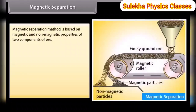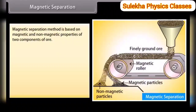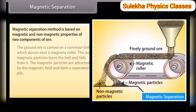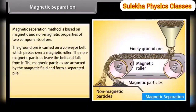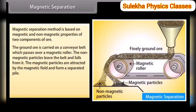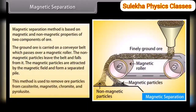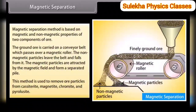Magnetic separation. This method is based on the magnetic and non-magnetic properties of two components of ore. The ground ore is carried on a conveyor belt which passes over a magnetic roller. The non-magnetic particles leave the belt and fall off, while the magnetic particles are attracted by the magnetic field and form a separated pile. This method is used to remove ore particles from cassiterite, magnetite, chromite and pyrolucite.